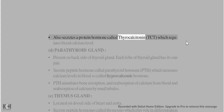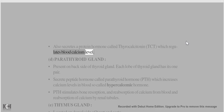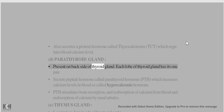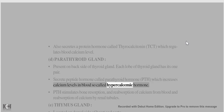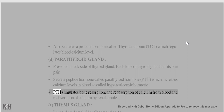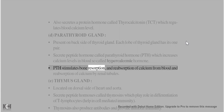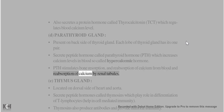The thyroid gland also secretes a protein hormone called thyrocalcitonin (TCT), which regulates blood calcium levels. Parathyroid gland is present on the backside of the thyroid gland; each lobe has one pair. It secretes parathyroid hormone (PTH), a peptide hormone which increases calcium levels in blood – called the hypercalcemic hormone. PTH stimulates bone resorption and reabsorption of calcium from blood and renal tubules.